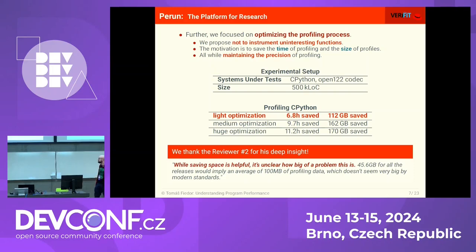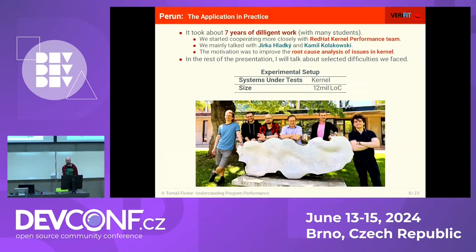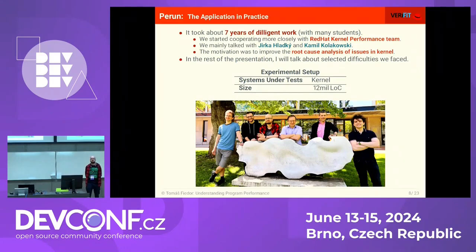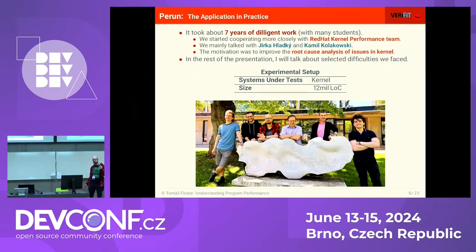Maybe we were not ambitious enough. It took about seven years of diligent work with many students, and we started talking with Red Hat again, which had been supporting us for quite a lot of time. We got talking with the Kernel performance team, mainly with Jirka Hlapki and his colleague Kamil Kolakovsky, and we wanted to improve the root cause analysis of issues found directly in the Kernel.